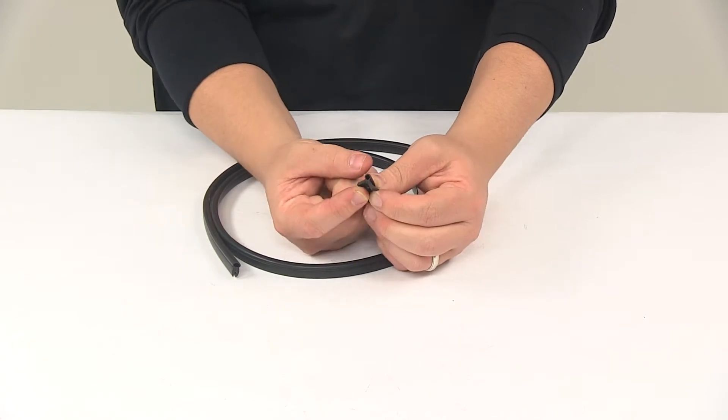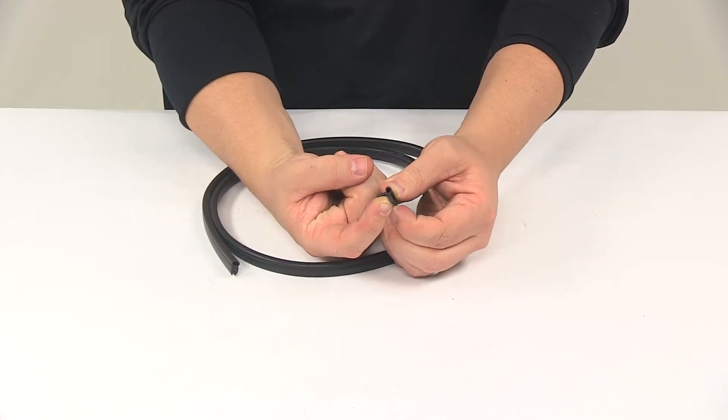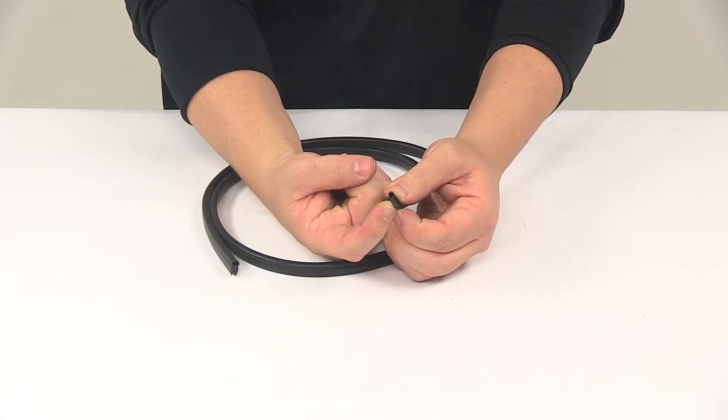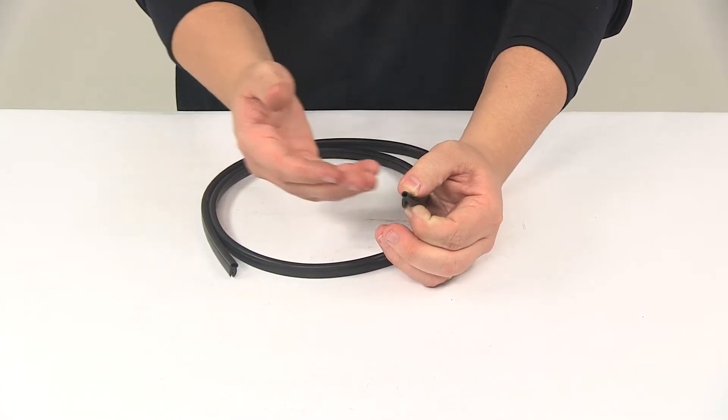The open part right there, as you can see that splits open. That pushes down onto the vent lip, so the seal will push right on.